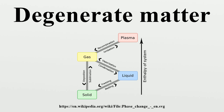arises at extraordinarily high density or at extremely low temperatures in laboratories. It occurs for matter particles such as electrons, neutrons, protons, and fermions in general and is referred to as electron degenerate matter, neutron degenerate matter, etc. In a mixture of particles, such as ions and electrons in white dwarfs or metals, the electrons may be degenerate,